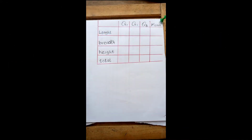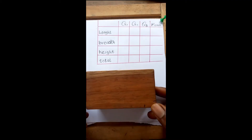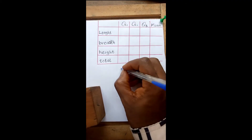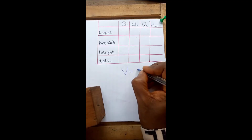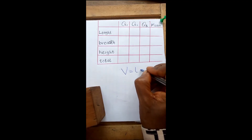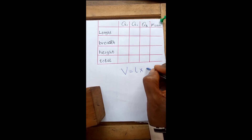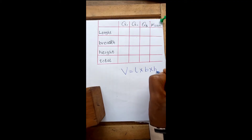Hello everyone, you are welcome. In today's experiment, we are going to calculate the volume of this rectangular wooden block with the formula V is equal to length times the breadth times the height.